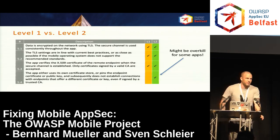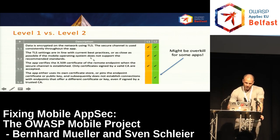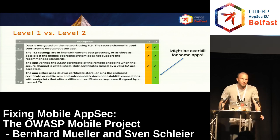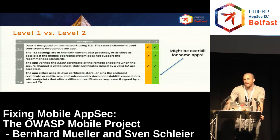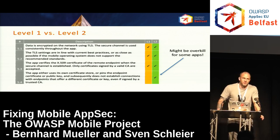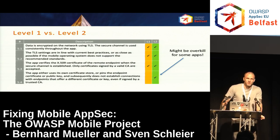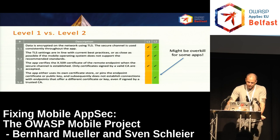As an example, this group of requirements discusses network communication. The level one requirements are pretty much common sense: you should encrypt data on the network, use proven protocols like TLS in a proven configuration, and verify the server certificate, which most HTTPS APIs do automatically. But when it comes to SSL pinning or implementing a custom CA store, this is not something you always have to do. For a simple app it's not necessary, but for a banking app or one that handles financial transactions, it is definitely recommended.